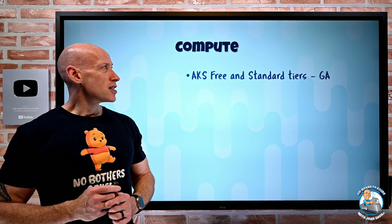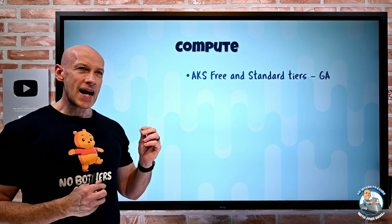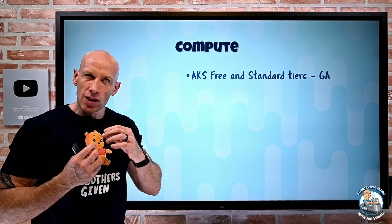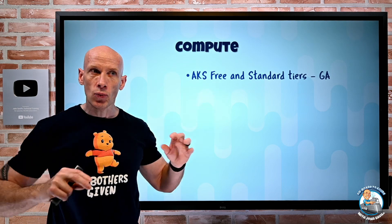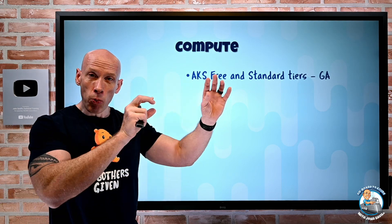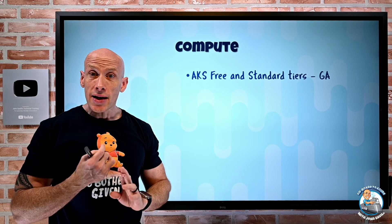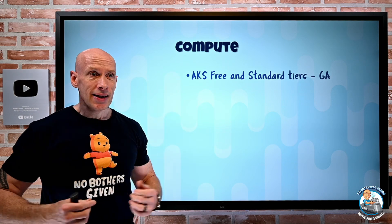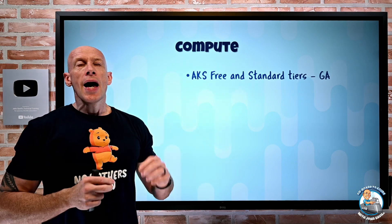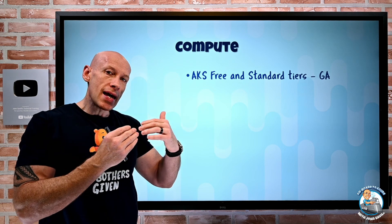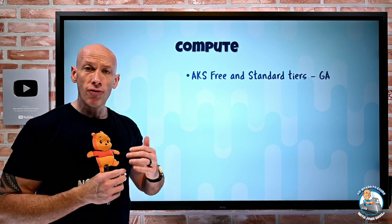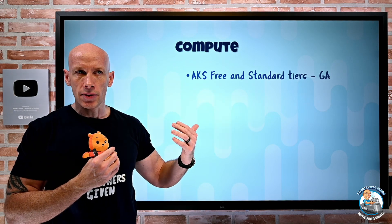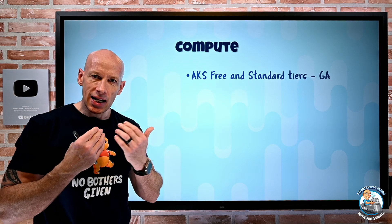On to the new updates for Compute. AKS now has in GA the free and standard tiers. This relates to the control plane. With Azure Kubernetes Service, the control plane — that's things like the API server, the etcd stateful database, the scheduler, and the various controllers — they're all managed. It's those things that the free and standard tiers apply to. With free, it's free, but there's no SLA for that control plane, whereas with standard, you get an SLA for the control plane.